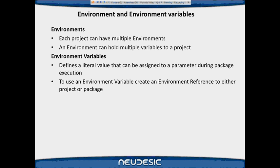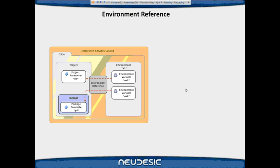What really replaces package configuration is environment reference. You have environments, environment variables, and parameters. What brings them together is environment reference. The picture shows two parameters - P1 at project level and P2 at package level. You create an environment, say production E1, define environment variables EV1 and EV2, and environment reference ties them together. This completely replaces what we used as config files, XML indirect configuration in 2005 and 2008.